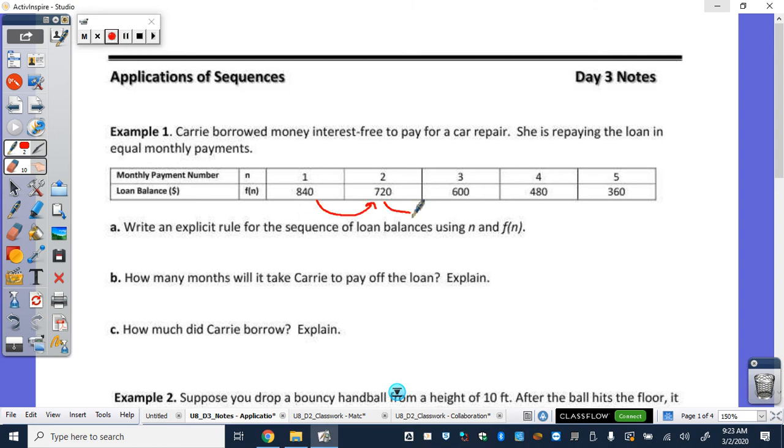How much are we going down by each month? So minus 120, is it 120 again? And then again? So then what kind of sequence do we have there if it's always going down by 120? Arithmetic. If it's a constant same amount each time, that means it's arithmetic. So we're dealing with an arithmetic sequence here.